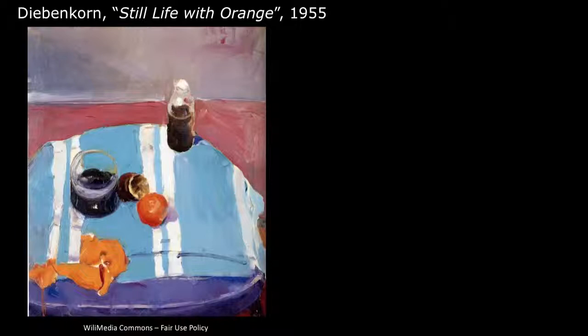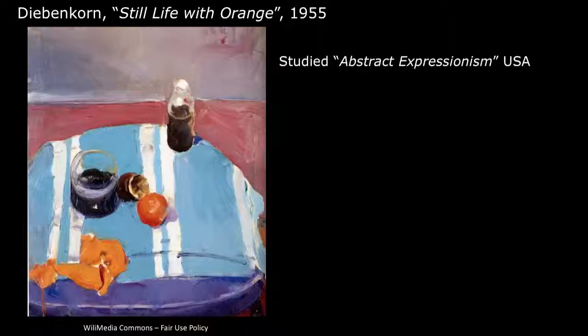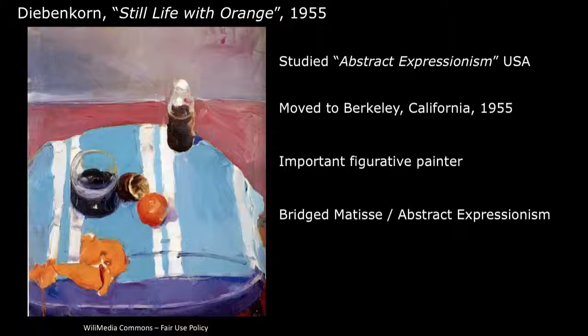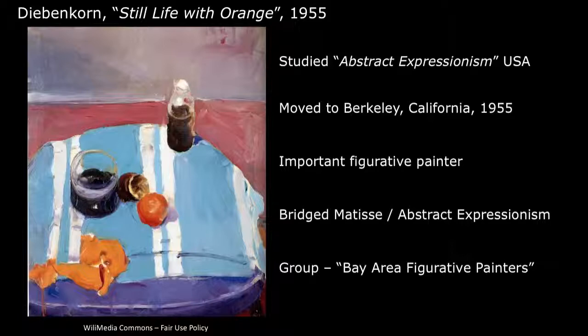This is a painting by Richard Diebenkorn called Still Life with Orange Peel from 1955. This colorful painting by the American artist Diebenkorn, who studied abstract expressionism painting at the University of New Mexico and moved to Berkeley, California in 1955 to teach painting. Diebenkorn became an important figurative painter in a style that bridged between Matisse and abstract expressionism. He belonged to an influential group of California artists called the Bay Area figurative painters, who did not completely abstract their paintings like many other avant-garde American artists did during the 1960s. By 1965, Diebenkorn traveled to Russia to study the paintings of Matisse in galleries there.